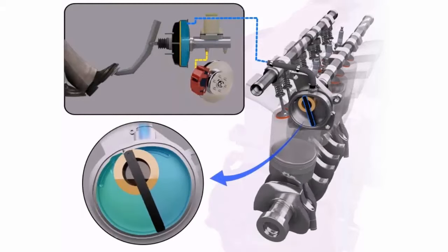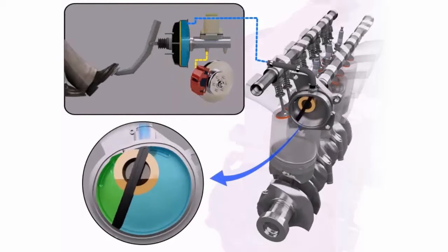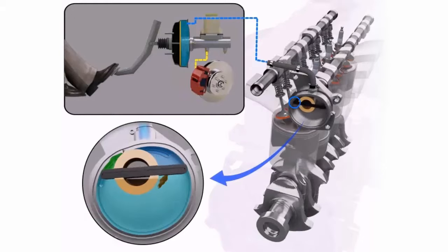The rotating arm creates vacuum as it sucks air from one part of the pump and pushes it out through an exhaust duct.